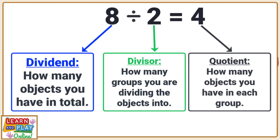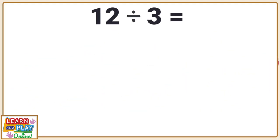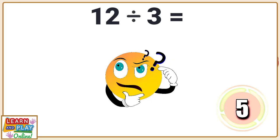Let's now do one more question. Our new number sentence this time is 12 divided by 3. How many objects do we have in total? 12. And how many groups are you going to divide 12 objects into? 3.